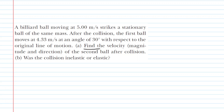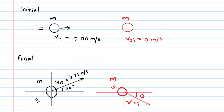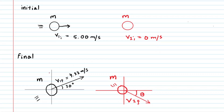Our first objective is to find the velocity of the second ball after the collision. Let's take a look at a picture that represents the given information. Each ball has the same mass, labeled m. Initially, the first ball is traveling horizontally towards the stationary second ball. Because the second ball is stationary, its initial velocity is zero. After the collision, the first ball travels off at an angle of 30 degrees, and the second ball travels off at some unknown angle with some unknown final velocity.